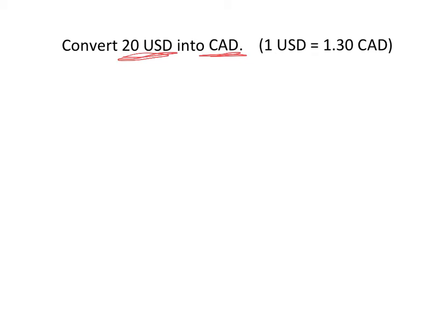And anytime you do a conversion, whether it's money or length or weight or anything, you need a conversion. So if we look up the conversion, this can change, but let's say one U.S. dollar is equal to $1.30 Canadian. So that's our conversion.